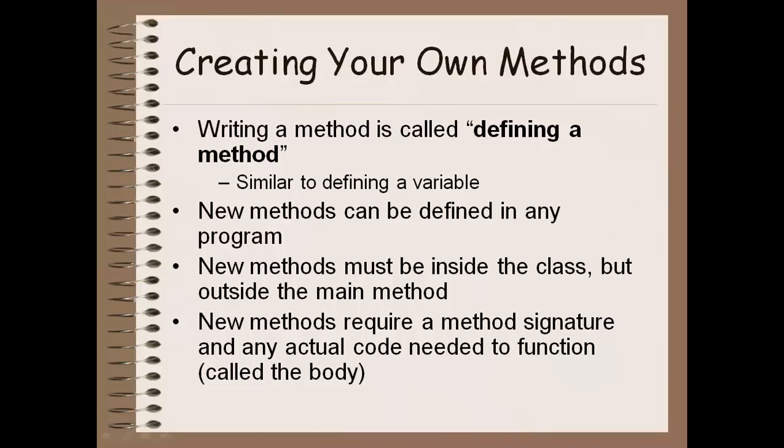So a review from the previous lesson on creating your own methods. To do this, it's called defining a method. So it's like defining a variable, writing the code to make that particular method run anytime anyone else wants to call it. New methods can be defined in any program, but they must be inside the class and outside of the main method. New methods require a method signature and any actual code needed to function, which is called the body of that method.